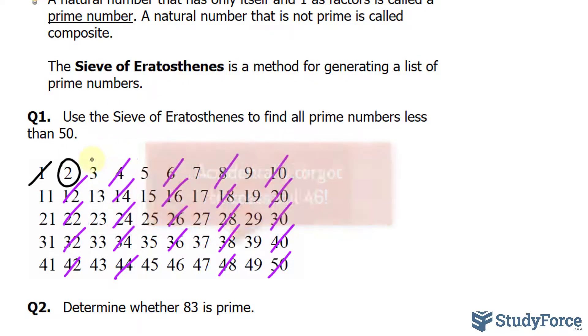The next number in the list, 3, is also a prime number. Do the same thing as with 2 by crossing out all of its multiples.